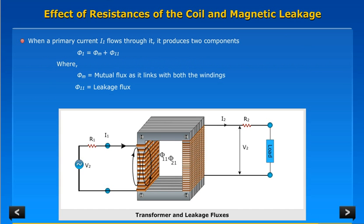When a primary current I1 flows through it, it produces two components. Phi1 is equal to PhiM plus Phi11, where PhiM is equal to mutual flux as it links with both the windings. Phi11 is equal to leakage flux.